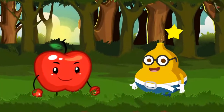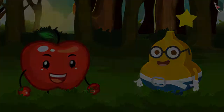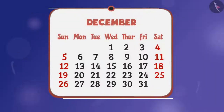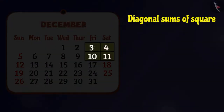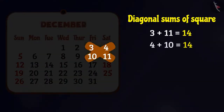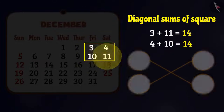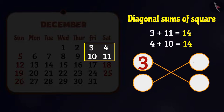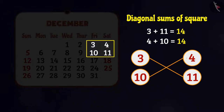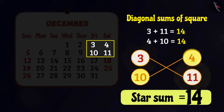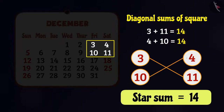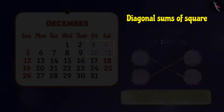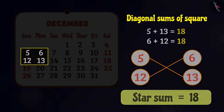Appy says, 'Fruity, we know that in a calendar the diagonal sums of a second order square are equal. Hence we can use these numbers to fill the star puzzle like this. Here the star sum is 14. In a similar way we can solve this puzzle in many ways like this.'